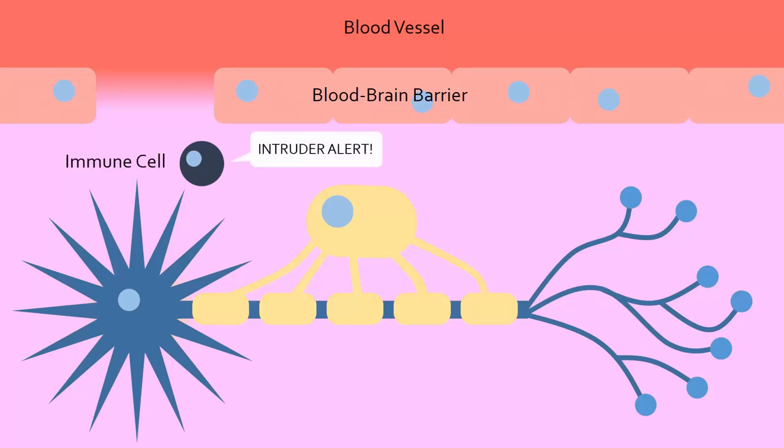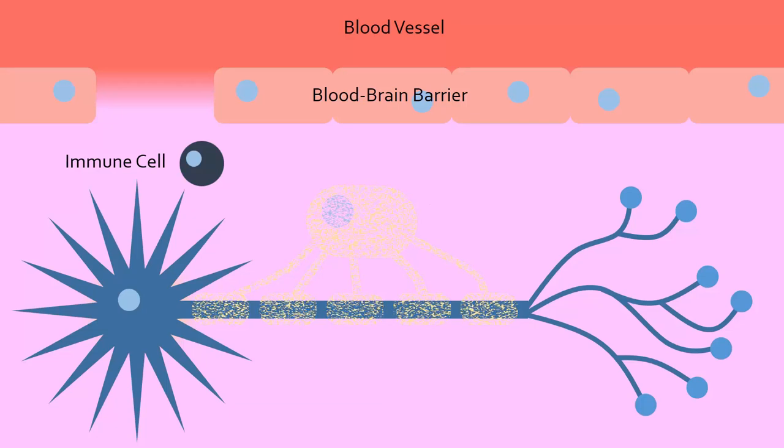These immune cells incorrectly recognize the myelin as a dangerous substance and begin to wreak havoc by producing inflammatory substances that damage myelin and eventually kill the oligodendrocytes, which is why MS is considered an autoimmune disease.